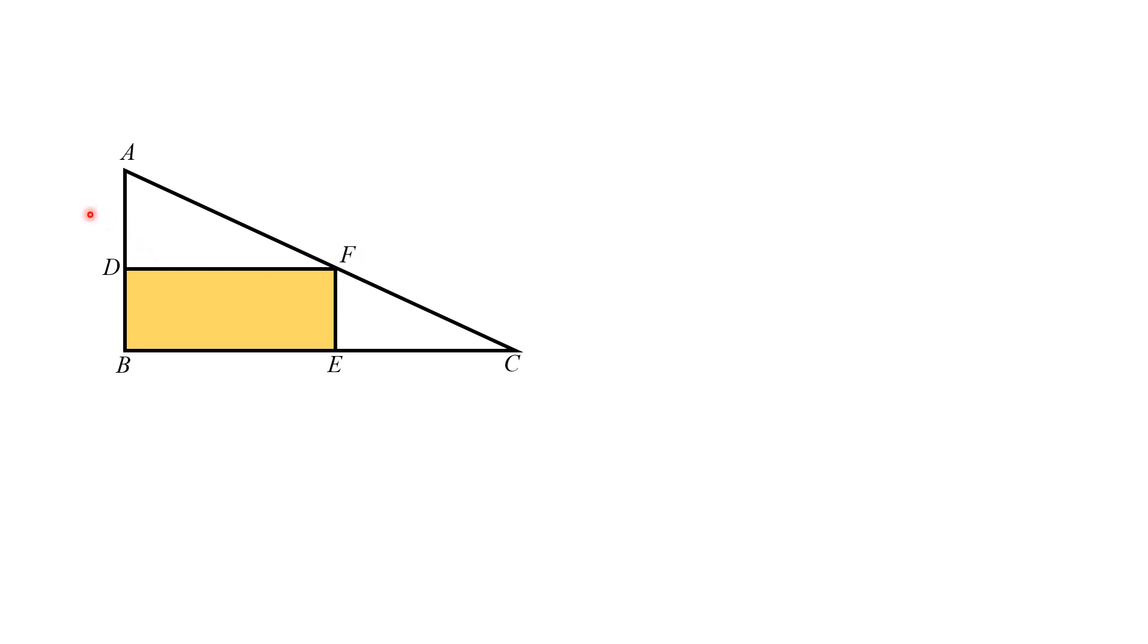Moreover, it is given that the length AD is equal to 4 units and the length EC is equal to 6 units. By this information we have to find the area of the shaded rectangle.